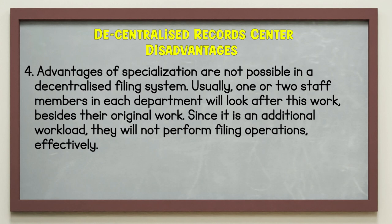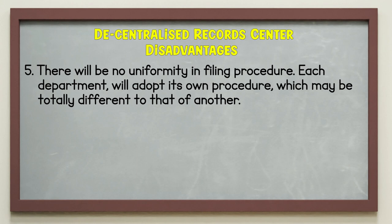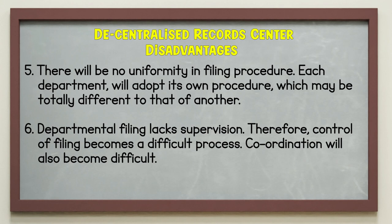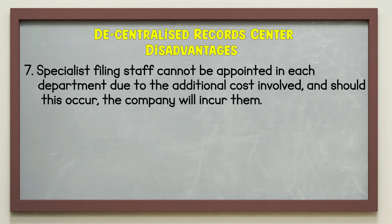4. Advantages of specialization are not possible in a decentralized filing system. 5. Usually, one or two staff members in each department will look after filing besides their original task. Since it is an additional workload, they will not perform filing operations effectively. There will be no uniformity in filing procedures, as each department will adopt its own procedure, which may be totally different from another's. 6. Departmental filing lacks supervision; therefore, control of filing becomes a difficult process and coordination will also become difficult. 7. Specialist filing staff cannot be appointed in each department due to the additional costs involved, and should this occur, the company will incur a debt.